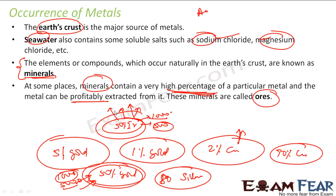Whether something is an ore also depends on current economic conditions. Currently gold is costly, so even a rock with 50% gold is profitable to extract from. A rock with 50% iron may still not be profitable if the cost involved is more than what you recover. So ores are nothing but minerals from which you can profitably extract a metal.